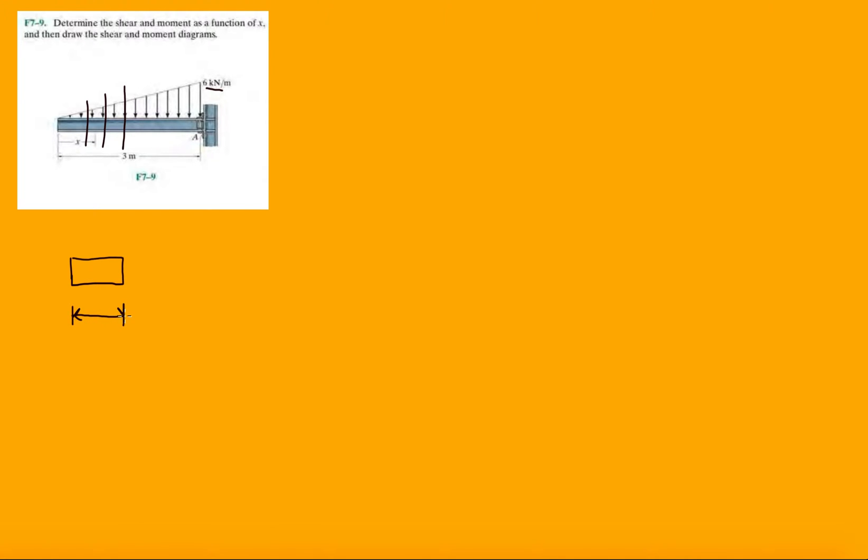We know that this piece has size X, or length X. There is nothing here on the left, and then we have a little bit of the distributed load on this portion. This is only for triangular distributed loads — we have to scale the distributed load, and I'm going to call it W here, because it is not 6 anymore. 6 is all the way up at the full height.